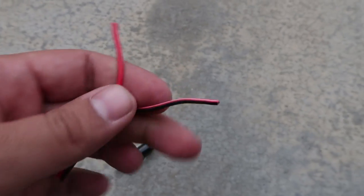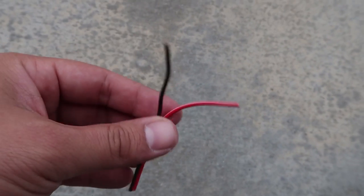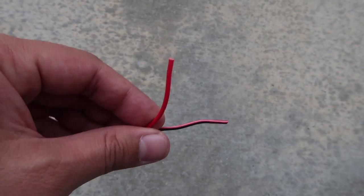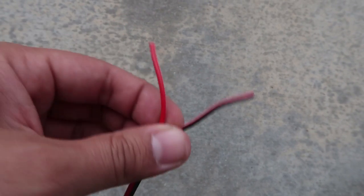So the wires kind of look like this. These are actually just a pair of connecting wires that I bought, but one wire has just red and the other one has like a black and red look to it.